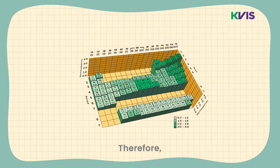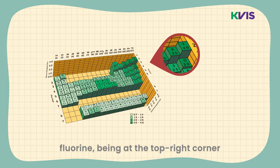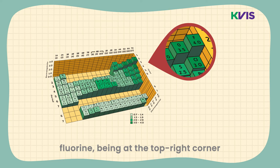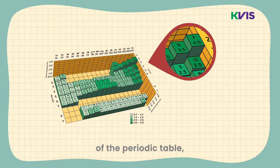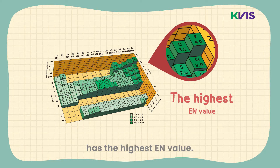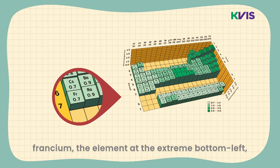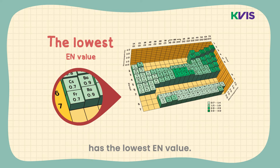Therefore, fluorine, being at the top right corner of the periodic table, has the highest EN value. On the other hand, francium, the element at the extreme bottom left, has the lowest EN value.